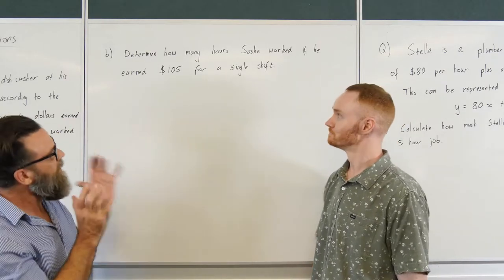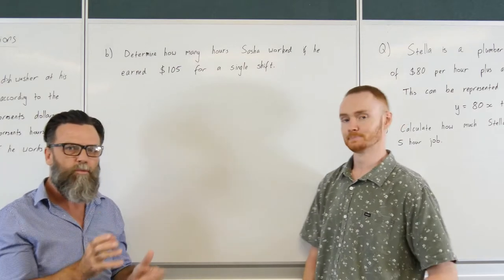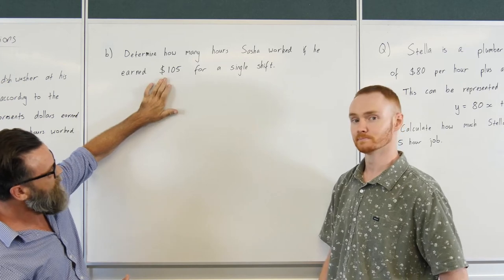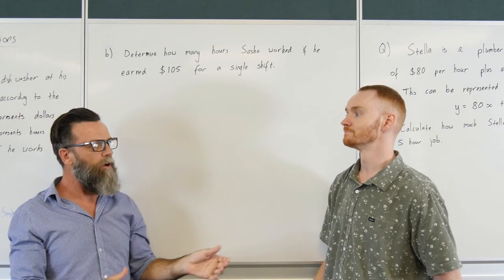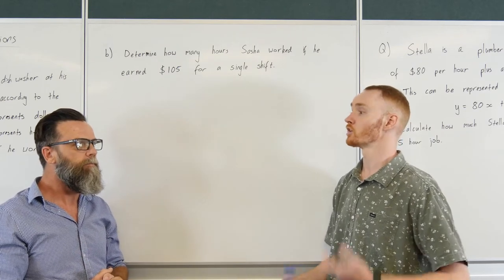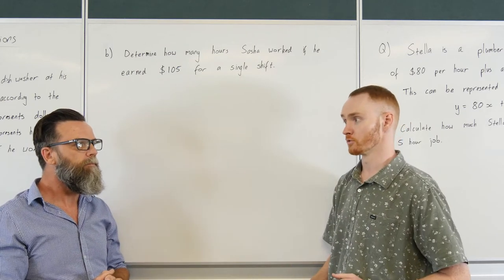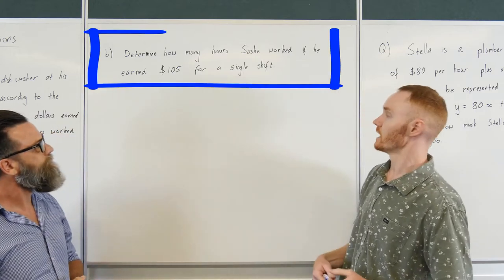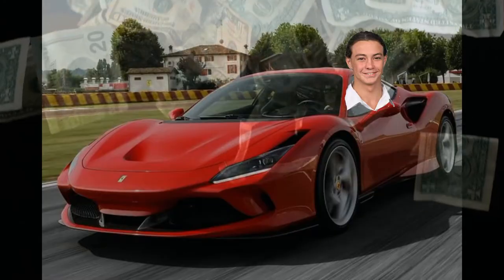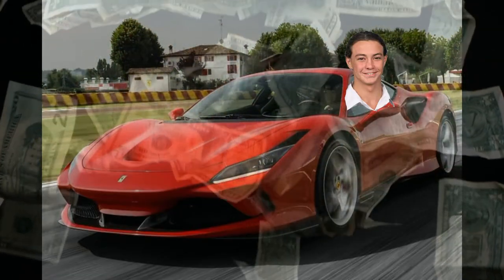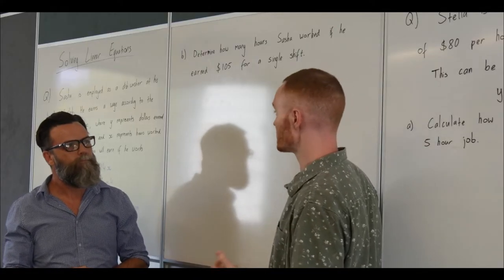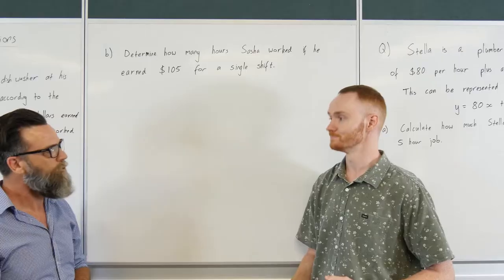So we've had a look at solving where we used the equation where Sasha was working for four hours. This one here we actually know how much he's going to earn but we've got to figure out how long he works for. Sounds a little bit harder. A little bit harder but still only going to be one step to solve it for us. So we've got to determine how many hours Sasha worked if he earned $105 for a single shift.